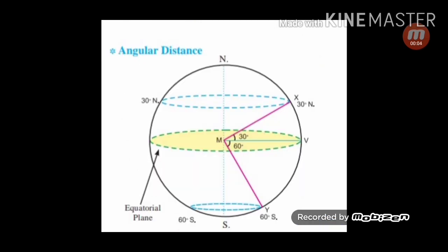The location of any place on the earth is determined with reference to the center of the earth. In order to do it, we consider a straight line joining the point on the surface and the center of the earth. At the center, it makes an angle with the plane of the equator. The measure of this angle is used in determining the locations. For example, in this figure, the measure of angle XMV is 30 degrees.